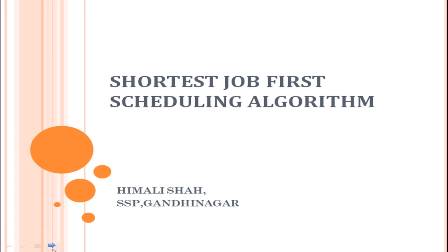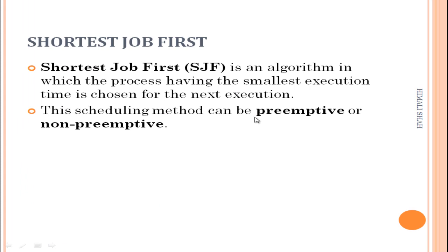So what do you mean by the SJF scheduling algorithm? It is an algorithm in which the process having the smallest execution time is chosen for the next execution. We have already studied FCFS — First Come First Serve — where the process that comes first is considered for execution first. In Shortest Job First, we consider the smallest execution time to choose the next process for execution.